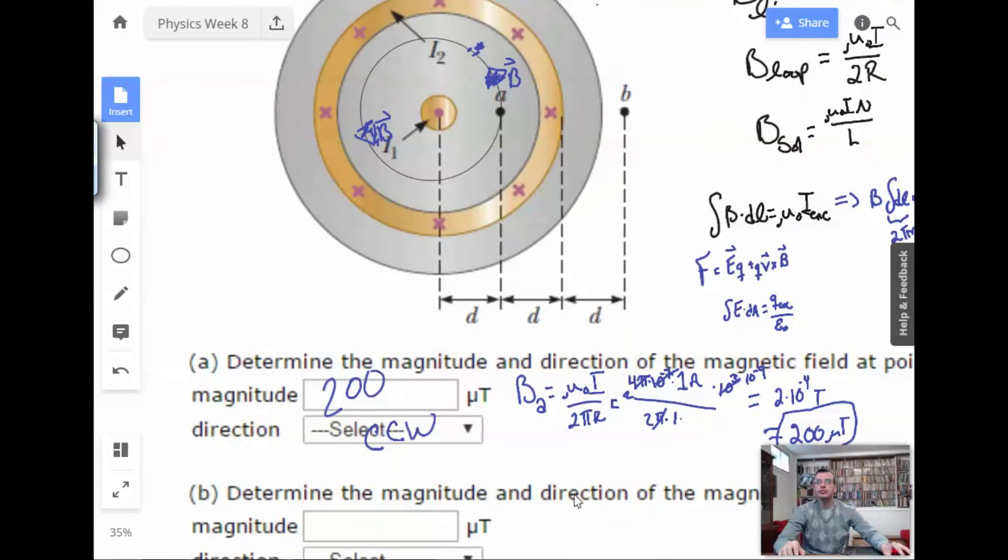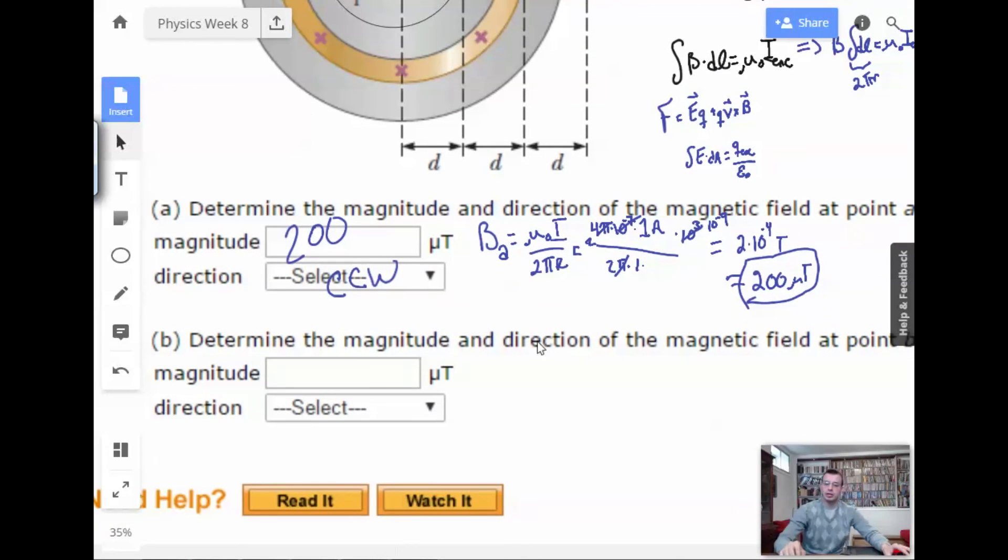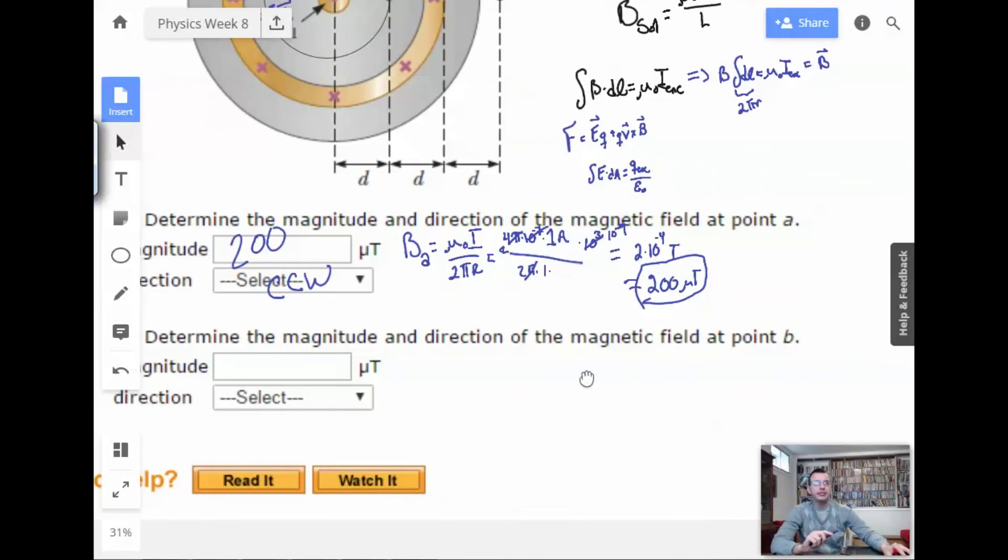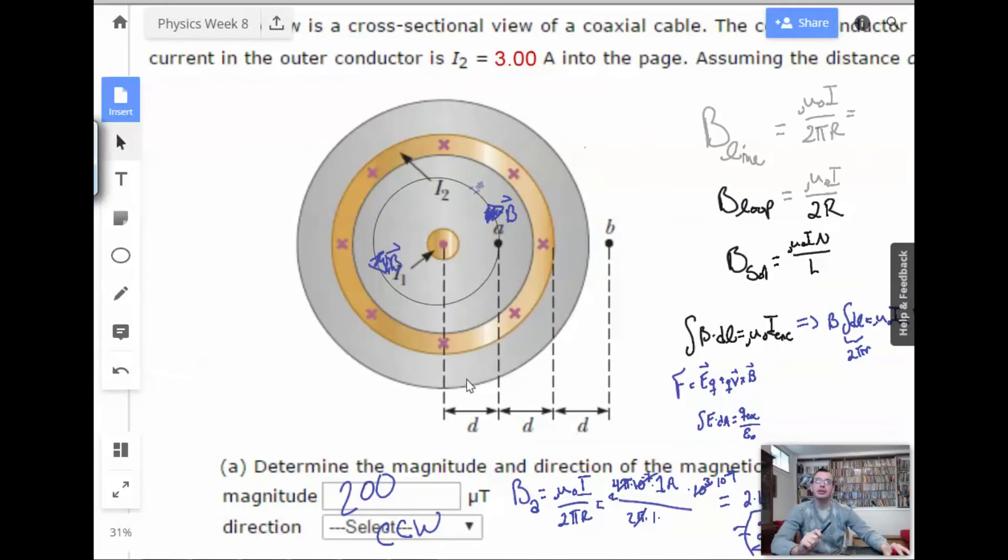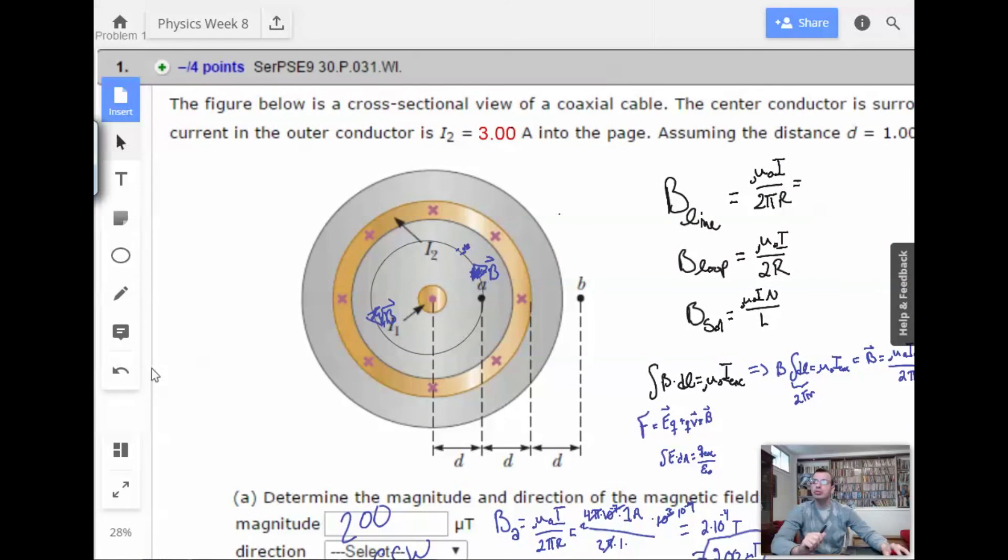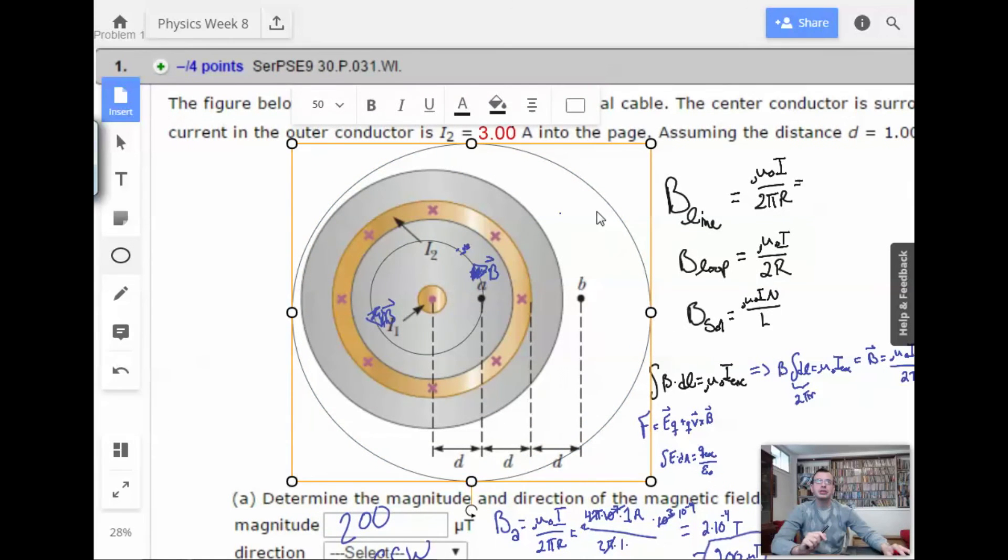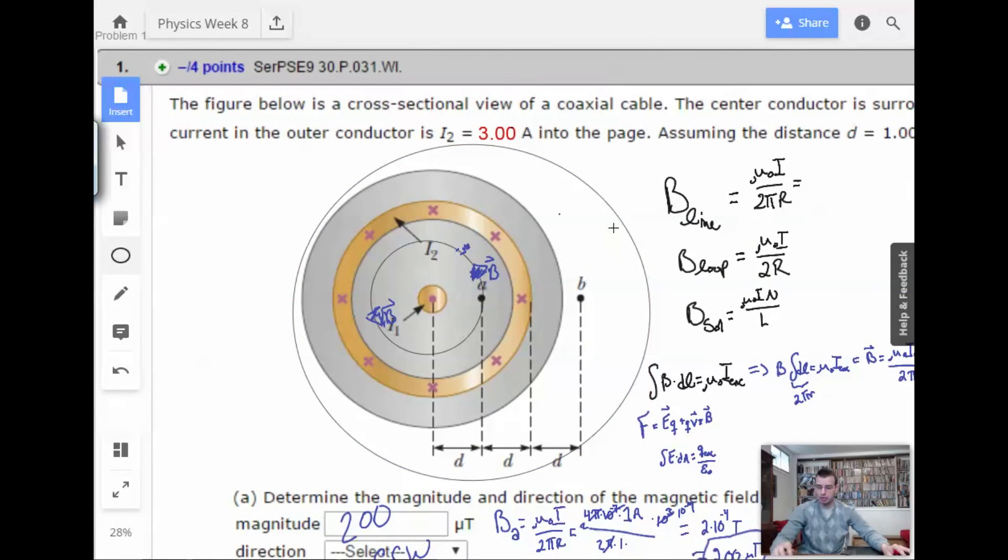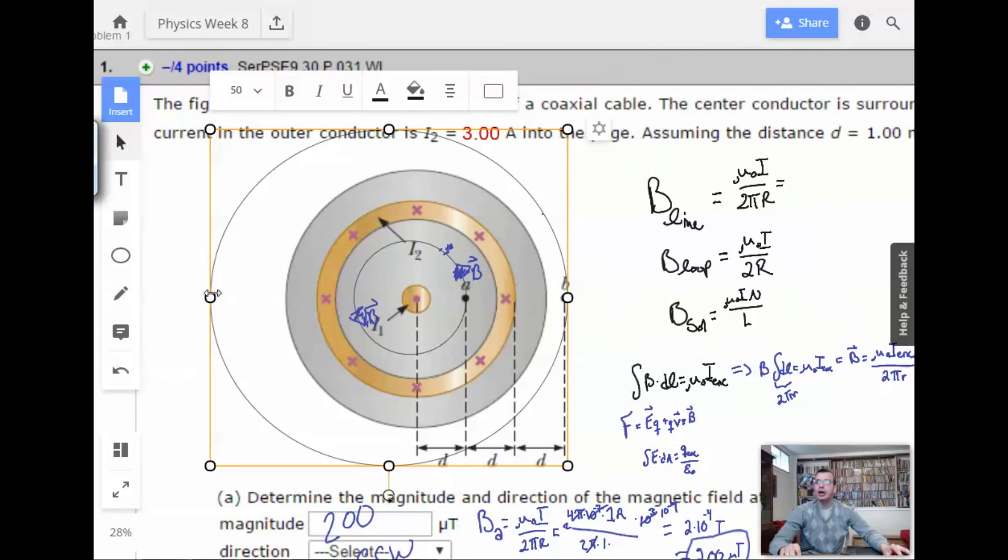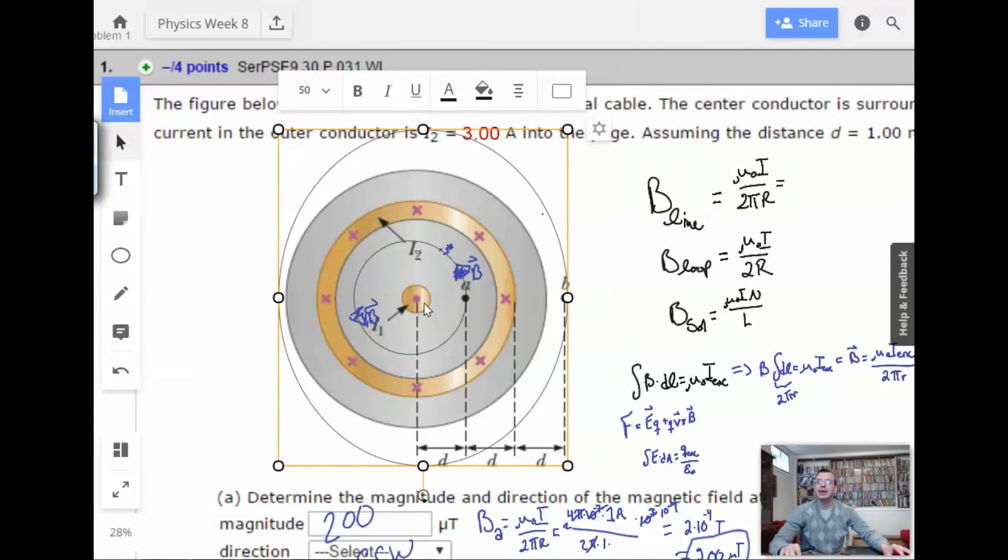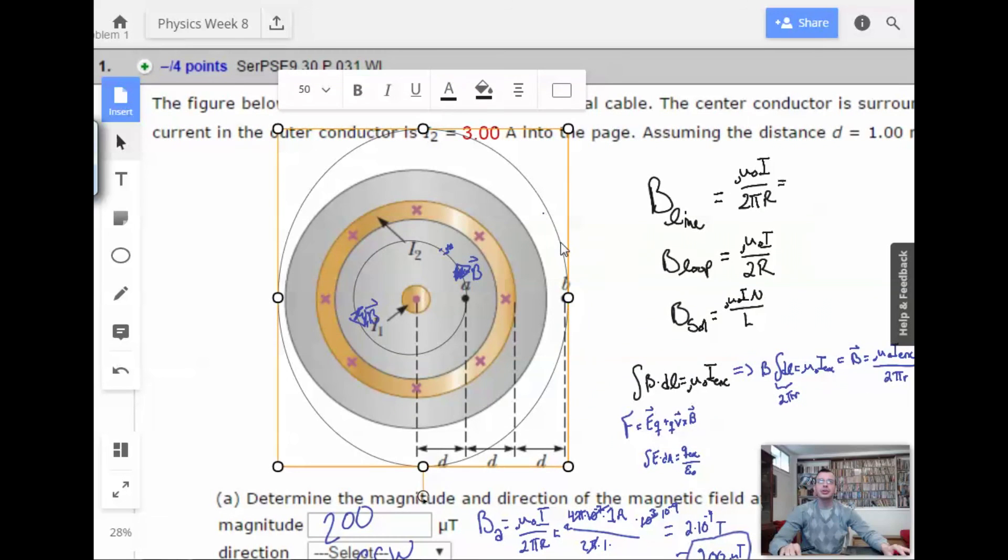On to part B. Determine the magnitude and direction of the magnetic field at point B. So, what's going to happen here is we're going to get two magnetic fields. We're still going to use a circle. The idea here is this is going to be the magnetic field.